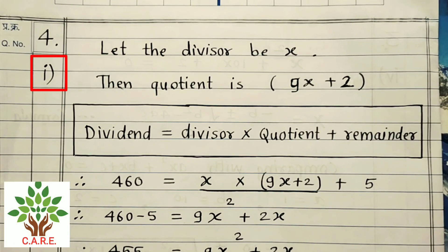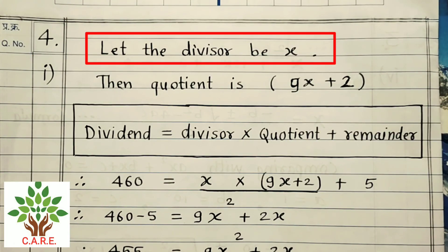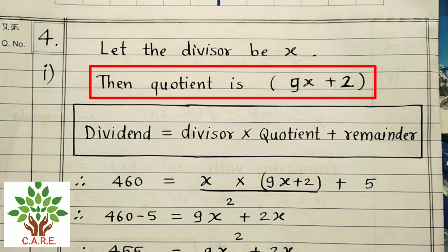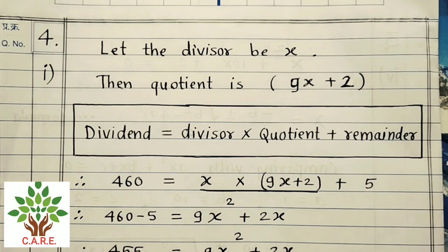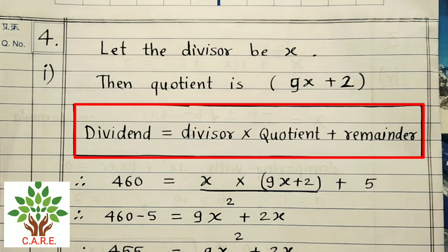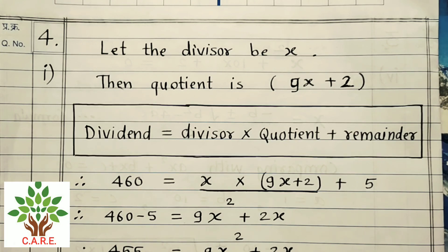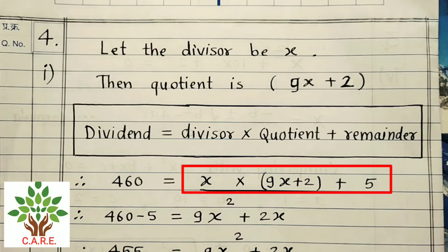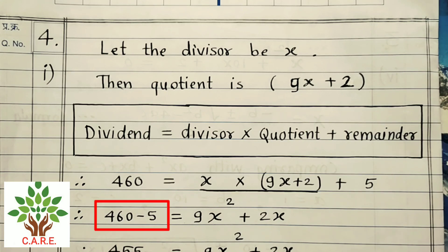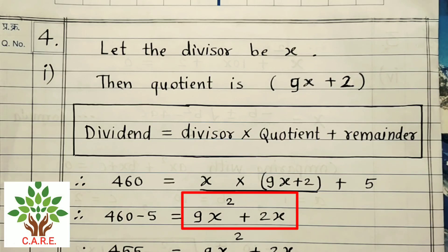Question 4.1 solution: Let the divisor be x. Then the quotient is 9x + 2, according to the given condition. Formula: dividend = divisor × quotient + remainder. Therefore, 460 = x(9x + 2) + 5.